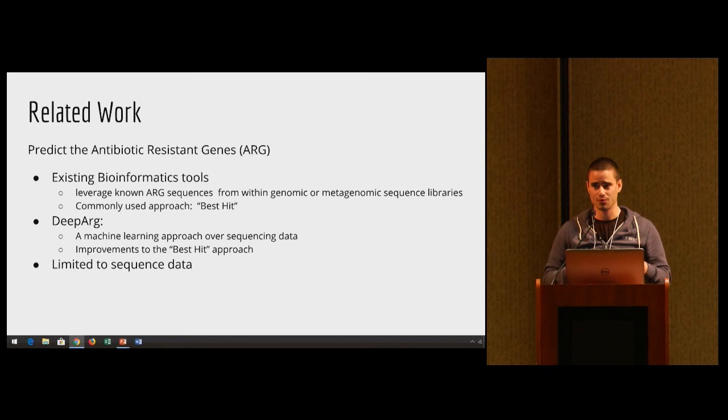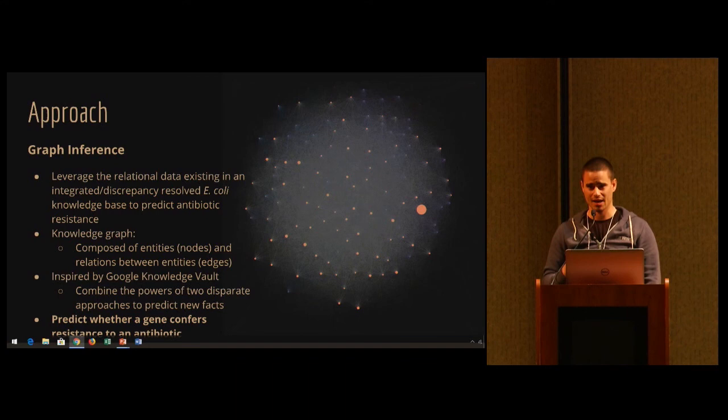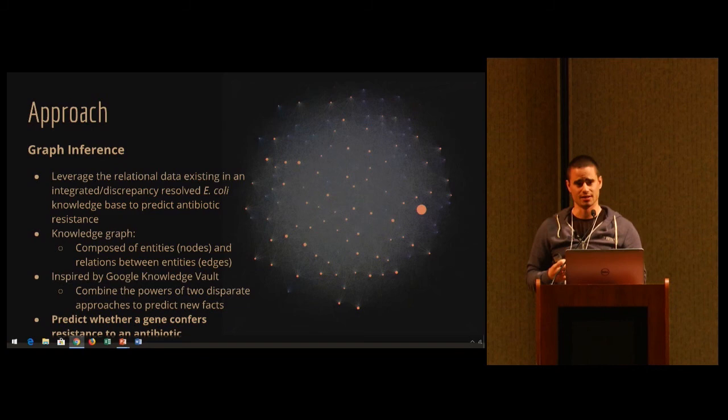For instance, what if a gene is involved in some type of molecular function or biological process, or a gene activates another gene that could confer resistance to a particular antibiotic? Maybe if we look into all this other additional information, maybe we can produce more quality predictions. So that's exactly what we decided to look into.